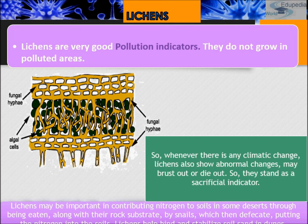Lichens are found almost everywhere and in all seasons. They absorb nutrients and pollutants from the air, often to high concentrations, and different species show different sensitivities and accumulation abilities. The fungus cannot survive if the algae is killed by pollution, making them excellent pollution indicators. Lichens may also contribute nitrogen to soils in some deserts through being eaten along with their rock substrate by snails, which then defecate, putting nitrogen into the soil. Lichens also help bind and stabilize soil and sand in dunes.